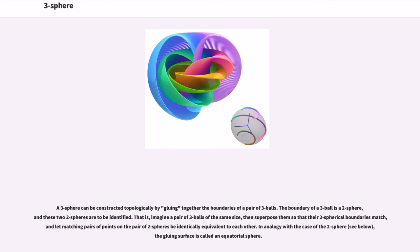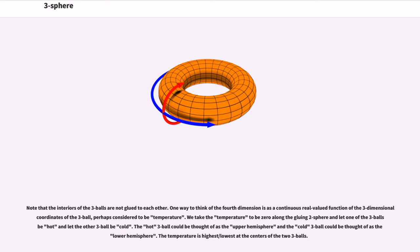In analogy with the case of the two-sphere, the gluing surface is called an equatorial sphere. Note that the interiors of the three balls are not glued to each other. One way to think of the fourth dimension is as a continuous real valued function of the three-dimensional coordinates of the three-ball, perhaps considered to be temperature. We take the temperature to be zero along the gluing two-sphere and let one of the three balls be hot and let the other three-ball be cold.